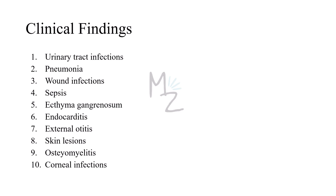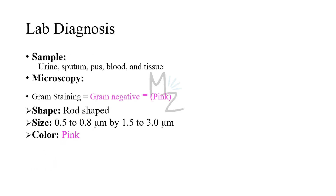Corneal infections caused by Pseudomonas aeruginosa are seen in contact lens users. All of these diseases have their own symptoms: urinary tract infections present with discomfort in the lower abdomen and burning or painful urination; pneumonia presents with fever and chest discomfort; wound infections present with pain in the area of the wound.